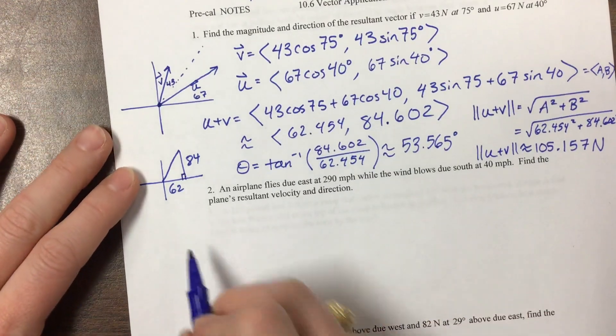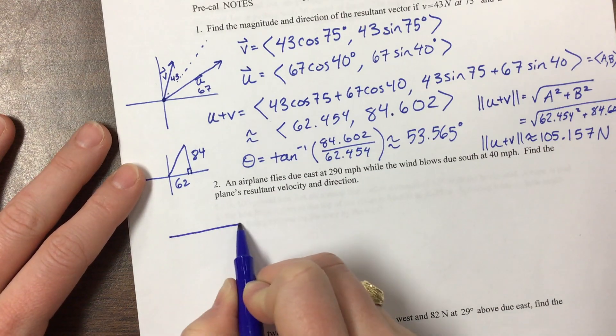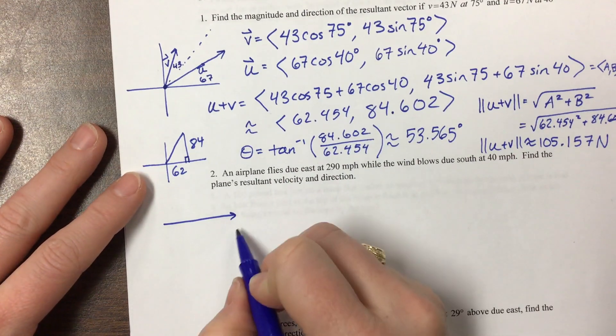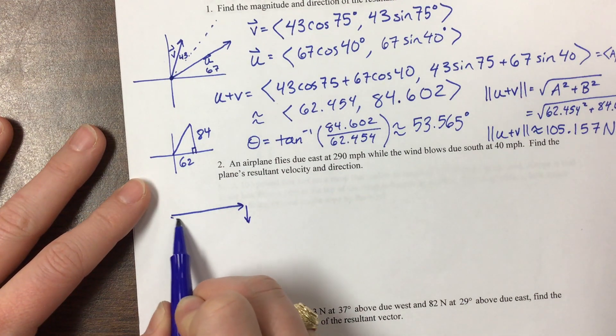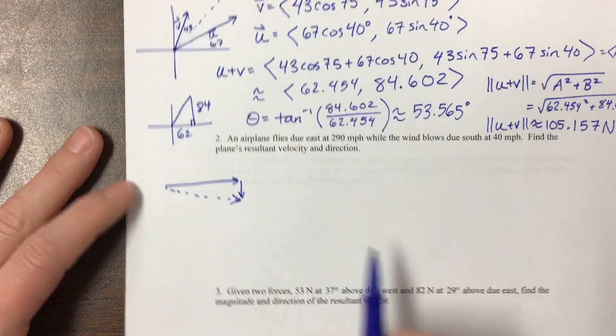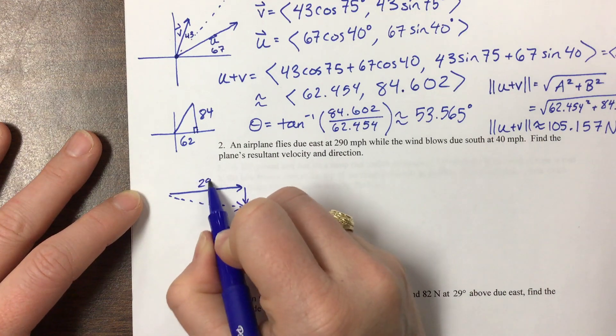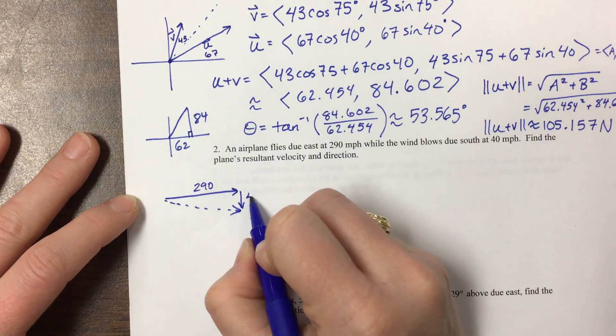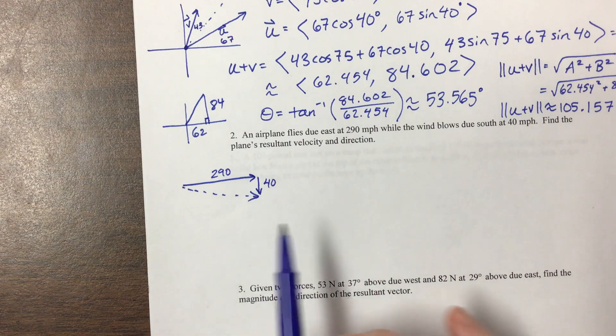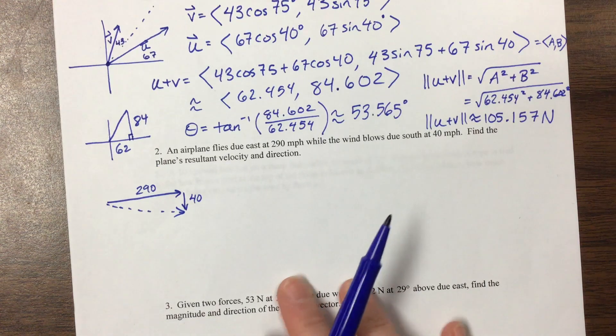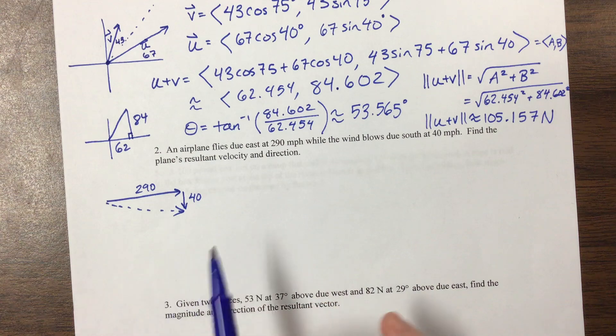An airplane flies due east, which would be something like this, and the wind is blowing itself at 40 miles per hour. We're going to find the plane's resultant. The plane is flying 290, and then this is 40, and its resultant velocity and direction. This one is nice and easy, and it's a right triangle, so life is grand.